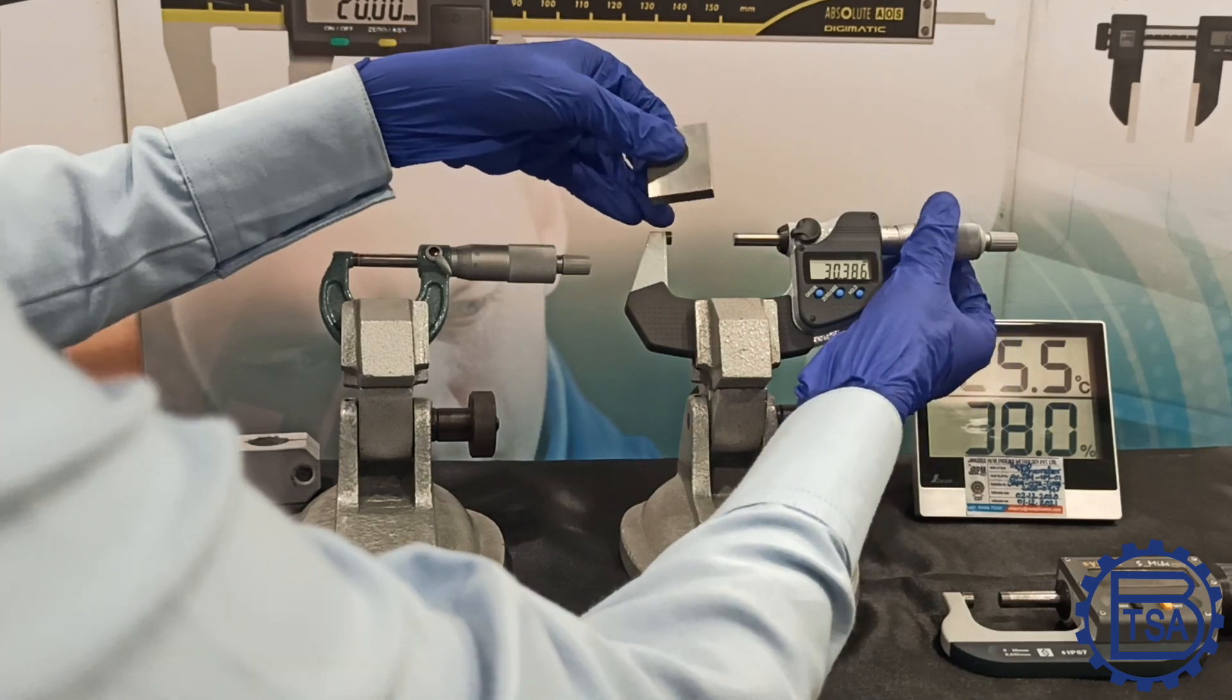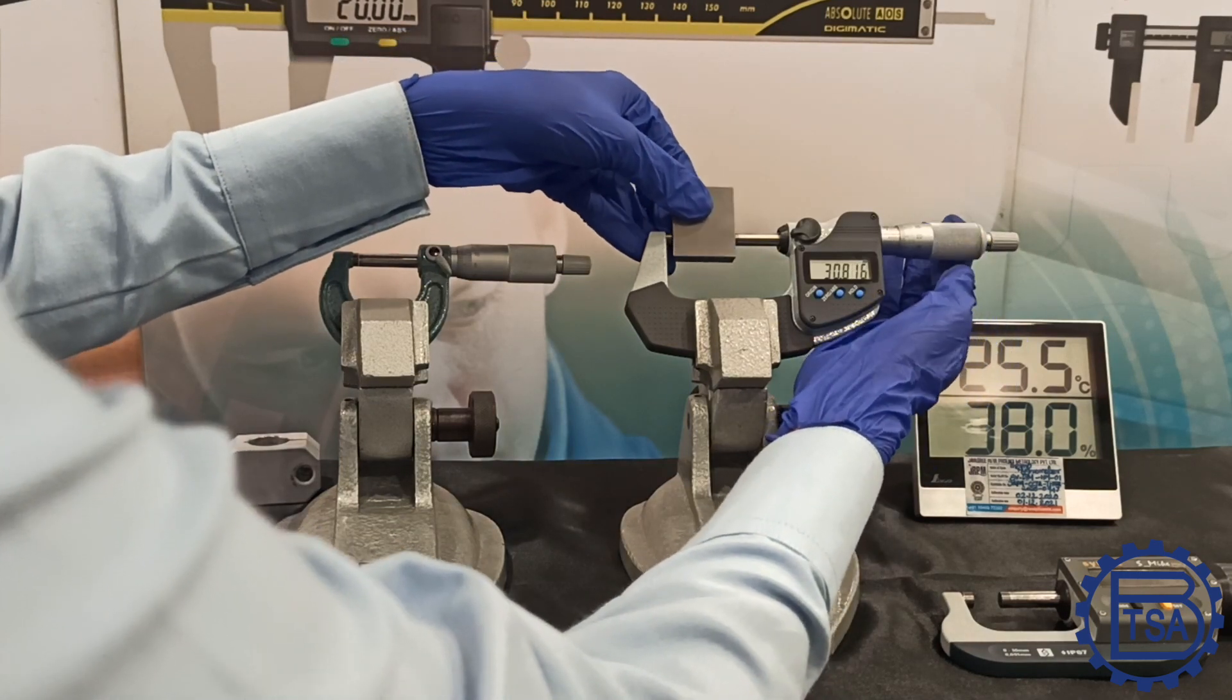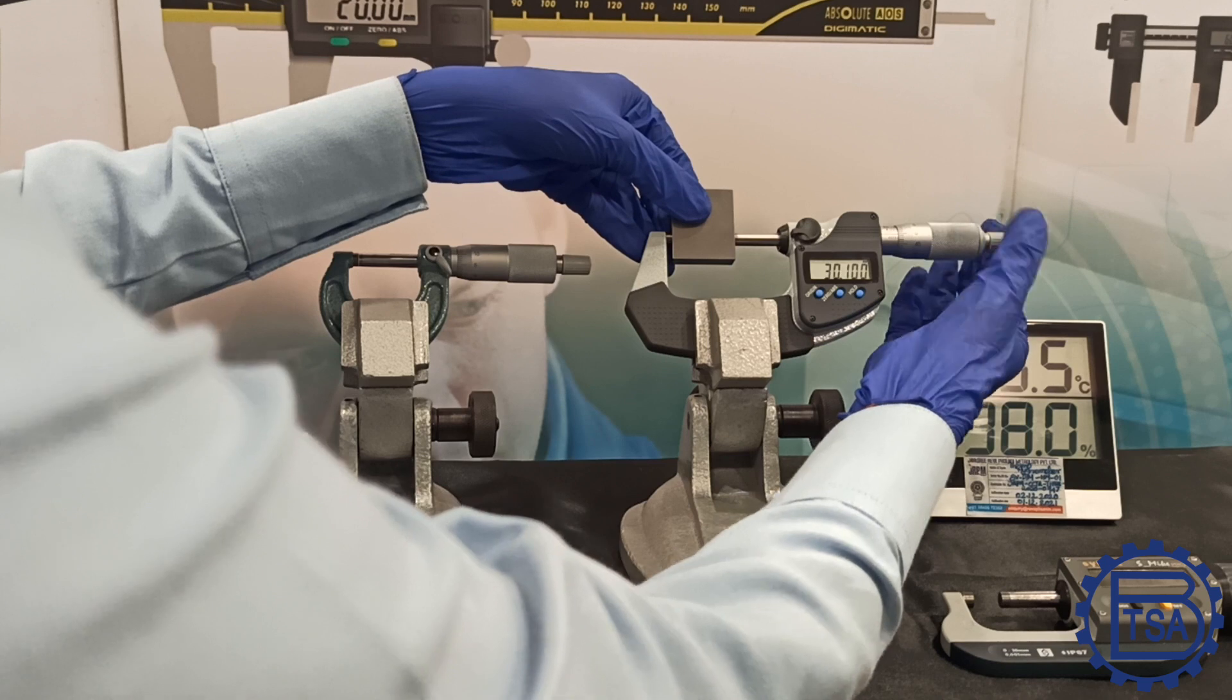Let's measure a 30 mm slip gauge. While measuring, start rotating the ratchet and not the thimble, as it does not indicate the optimum force.